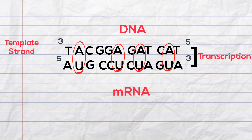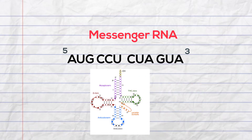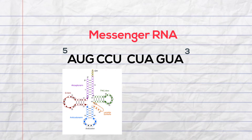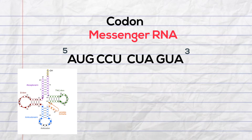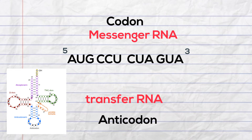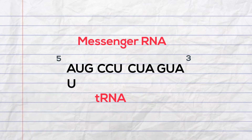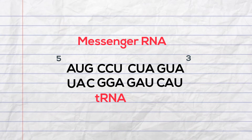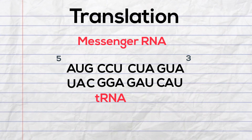Transfer RNA pairs with messenger RNA. Messenger RNA will be the codon, and the transfer RNA will be the anticodon. The transfer RNA has uracil, therefore A will pair with U, and U will pair with A, G with C, and so forth. This takes place outside the nucleus and is part of translation.